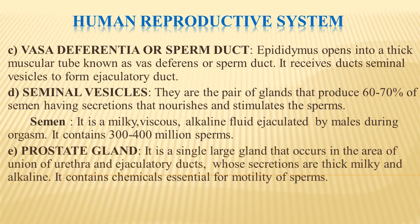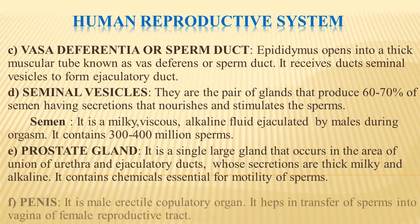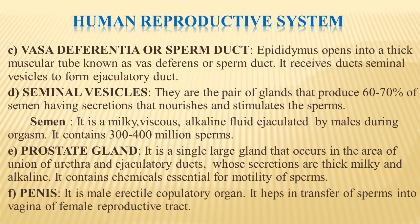The prostate gland is a single large gland at the union of the urethra and ejaculatory ducts. Its secretions are thick and milky, containing chemicals essential for the motility of sperms. The penis is the male erectile copulatory organ, which helps in the transfer of sperms into the vagina of the female reproductive tract. Together these parts of the male reproductive system play a very important role in reproduction.